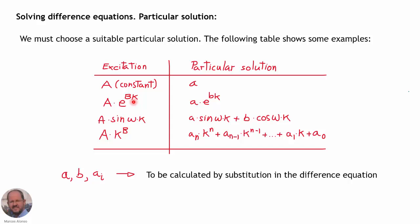In this table we show particular solutions depending on the excitation type. If the excitation is a constant, we use a constant. If it is an exponential function of the index k, we choose an exponential of k. For sinusoidal or cosinusoidal excitation, we choose a combination of sine and cosine. If the excitation is k raised to a constant exponent, we choose a polynomial. The constants a, b, a sub n, a sub n minus 1, and so on are calculated by substitution in the difference equation.